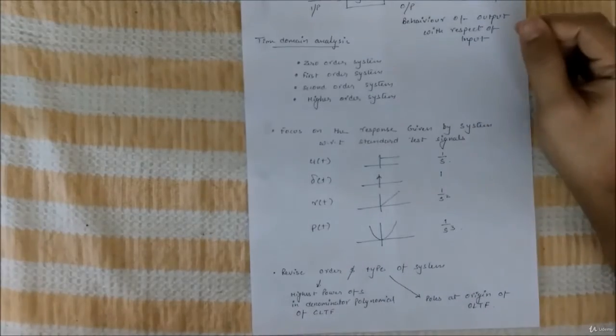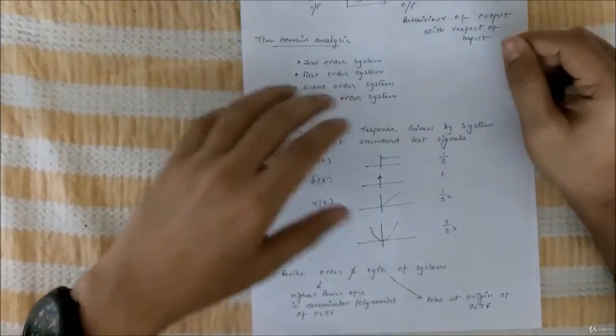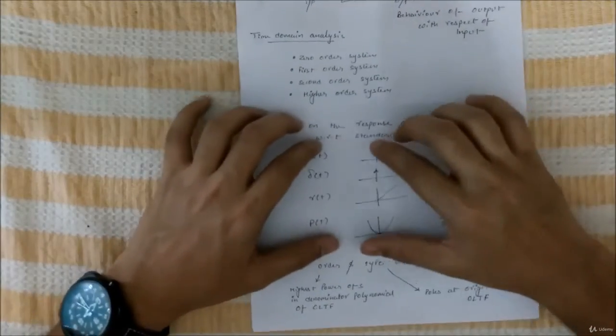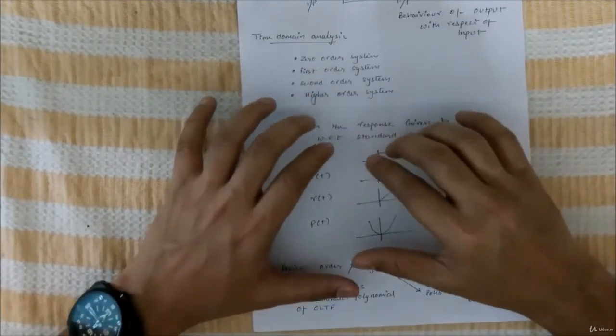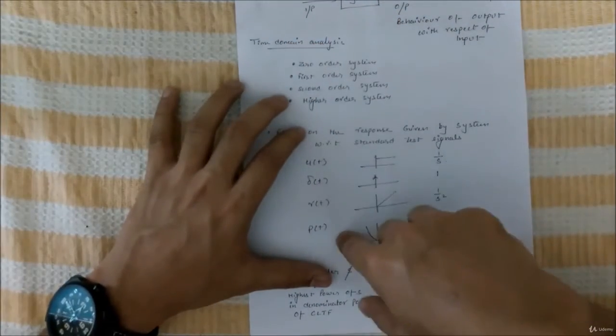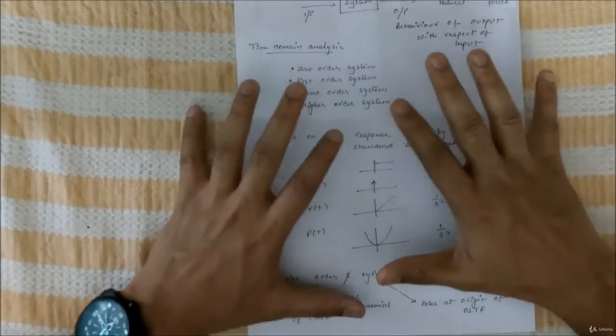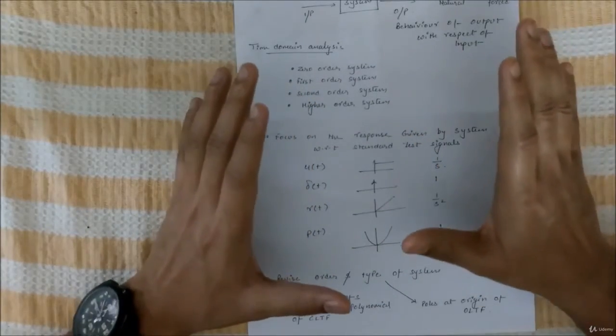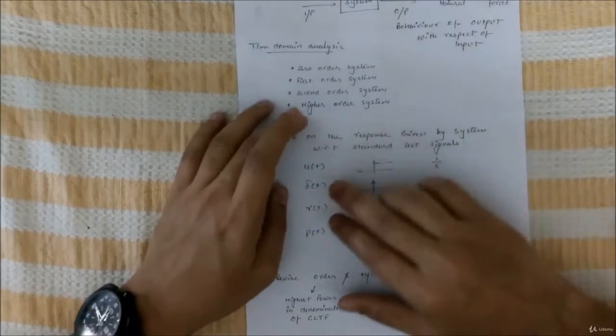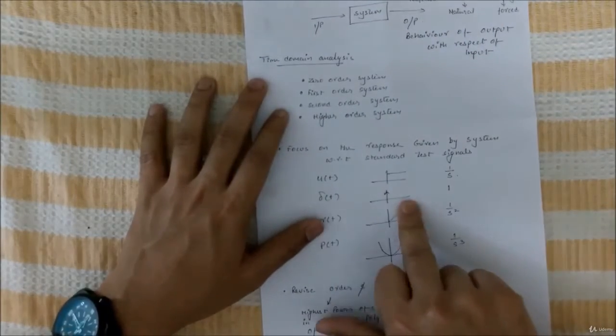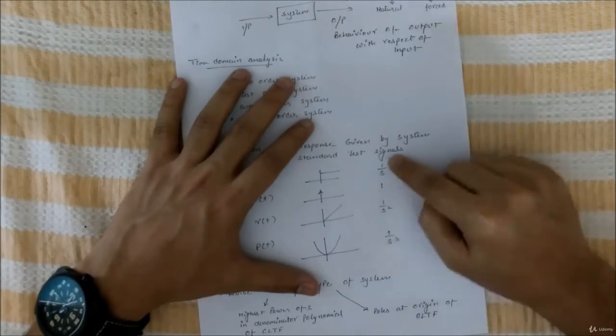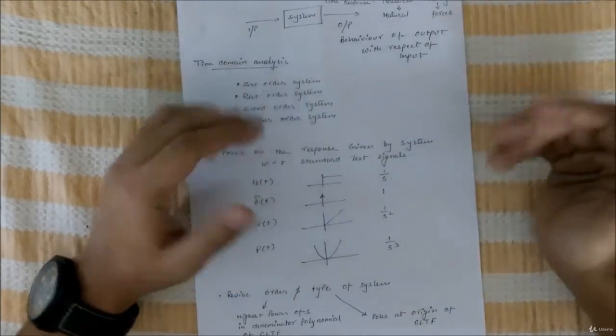We assume that if a system is performing satisfactorily with these inputs, it is assumed that it will perform well in practical real life situations. That's why we focus on these four signals: unit step, impulse, ramp, and parabolic signal. These are their Laplace transforms.